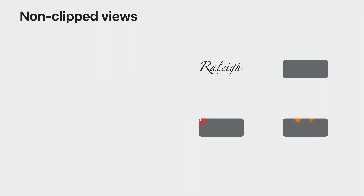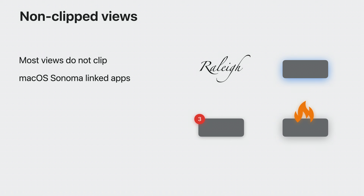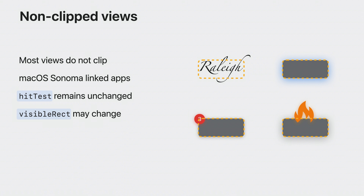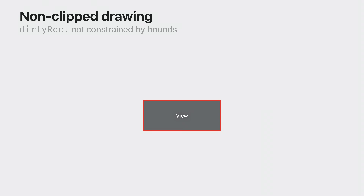There is a better way. When linked on macOS Sonoma, most NSViews no longer clip to their bounds by default. HitTesting remains unchanged and is determined by the geometry of the view — you can override hitTest to change this. Now that a view may draw outside of its bounds, its calculated visibleRect may also extend past its bounds, so review any code that uses visibleRect and adjust accordingly. This also impacts the dirtyRect parameter of the draw function — specifically, dirtyRect is not constrained by a view's bounds.